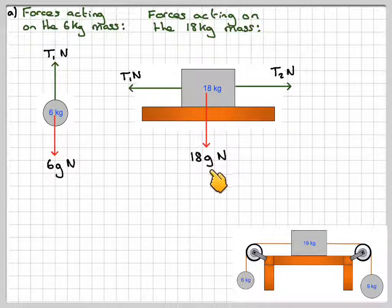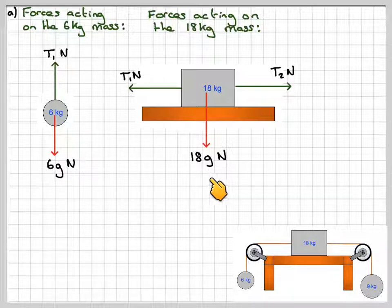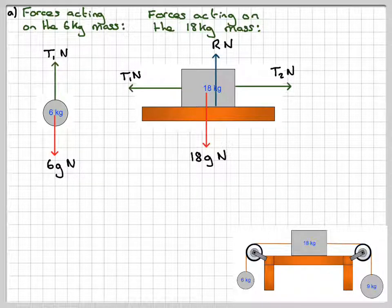And then we've got the weight of the mass acting downwards, which is 18G N, and then the reaction that it has with the table.